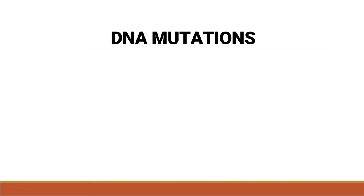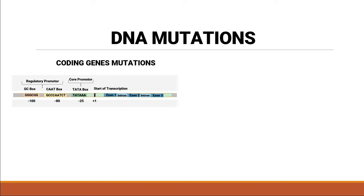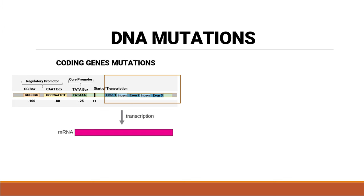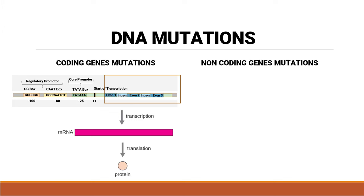DNA mutations can be of two different types. If the mutation is present in the coding region of the DNA, then it is called a coding gene mutation. Coding genes are basically going to code for messenger RNA and this messenger RNA will affect the protein from it. The other type of DNA mutation can be present in the non-coding area of the DNA and it is called a non-coding gene mutation.